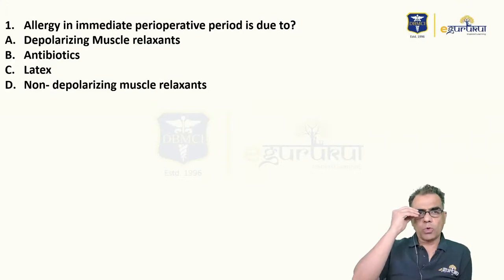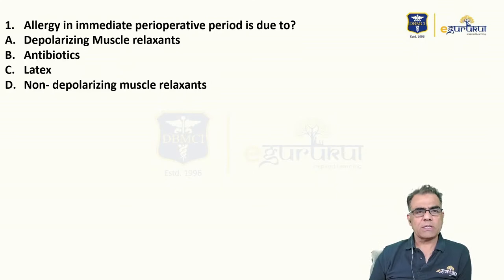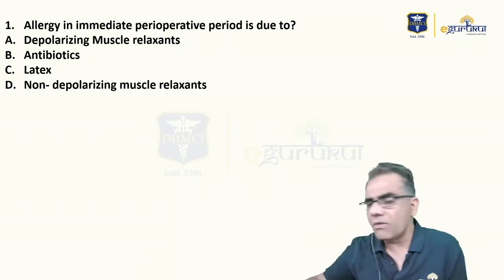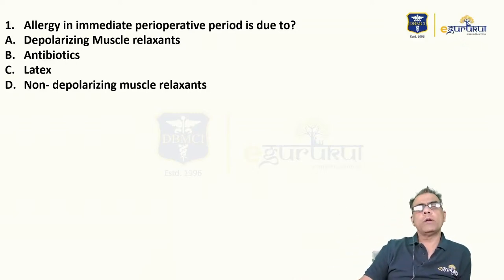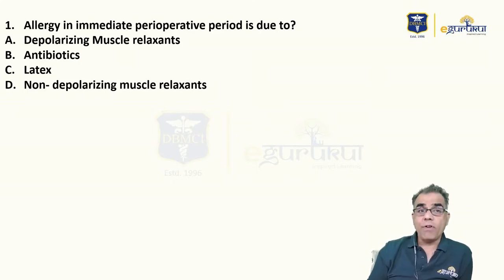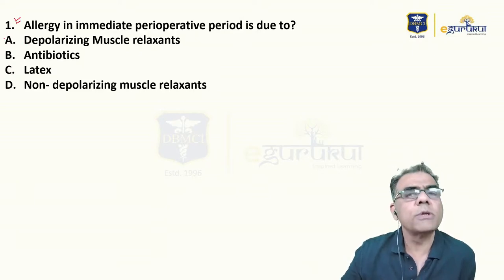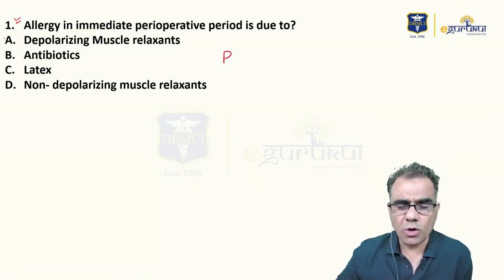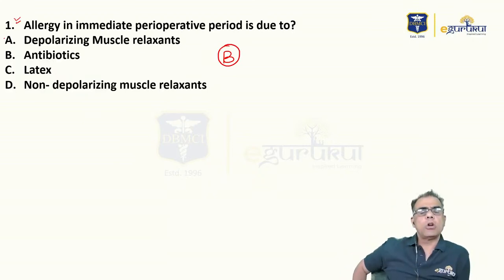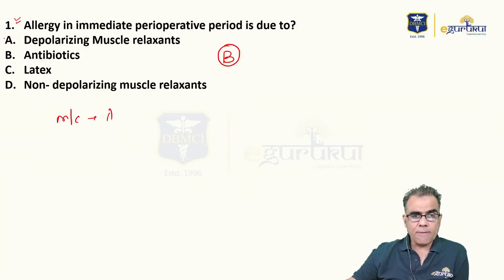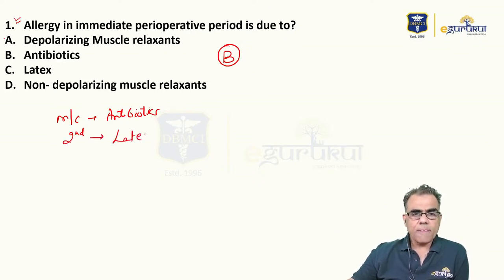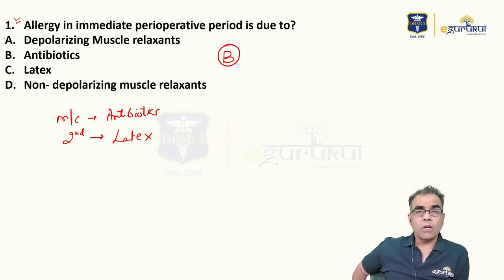Question number one: Allergy in the immediate perioperative period is due to — depolarizing muscle relaxants, antibiotics, latex, or non-depolarizing muscle relaxants? Until very recently, muscle relaxants were considered the most common cause of anaphylactic reactions. However, recent studies have found that the most common cause is antibiotics. So in current practice, the most common cause is antibiotics, not muscle relaxants. In fact, muscle relaxants are now third. If antibiotics is not in the choices, then the second most common cause is latex.